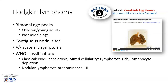Hodgkin lymphoma is a hematolymphoid malignancy, and interestingly, it has bimodal age peaks. It can occur in children, teenagers, and young adults, and also later in life. It tends to involve nodal sites. In other words, it is very rare to have extra-nodal Hodgkin lymphoma, and this is in contrast with non-Hodgkin lymphomas. When it does involve the nodal sites, for example cervical or mediastinal lymph nodes, it spreads to the next contiguous nodal site.